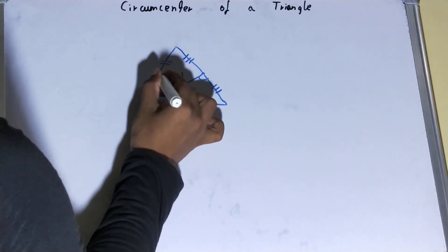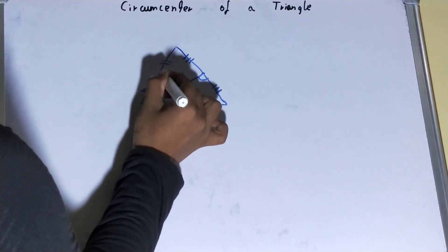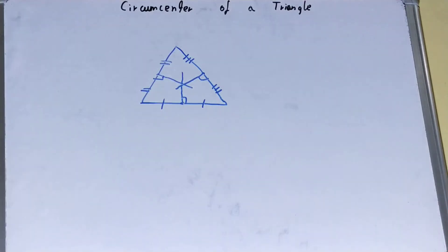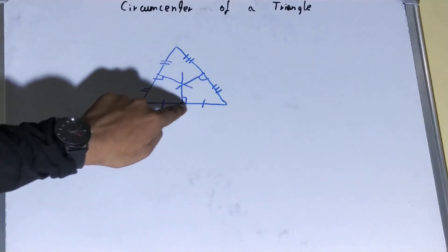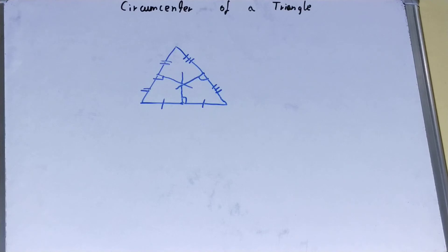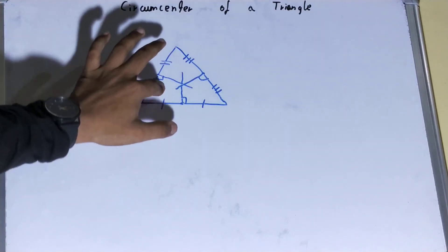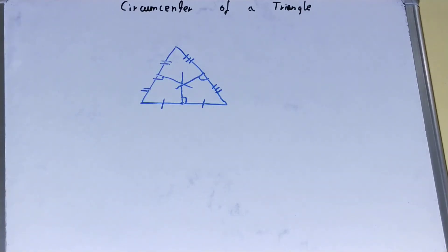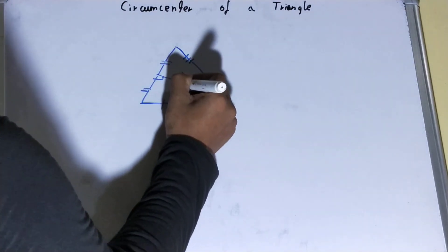All right, the angle should be 90 degrees. My drawing is not that good so it's not looking exactly 90 degrees, but you have to draw 90 degrees. And the point where these all three sides will meet, that will be our circumcenter of the triangle.